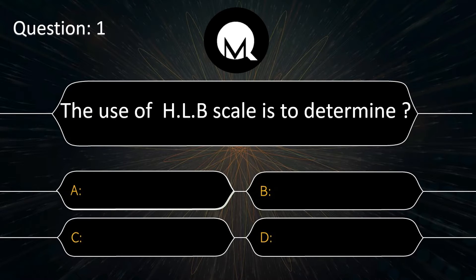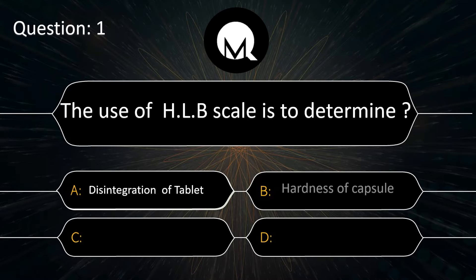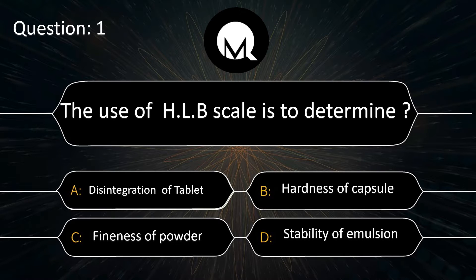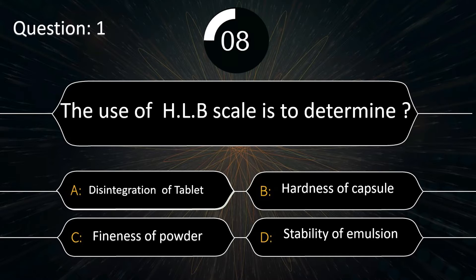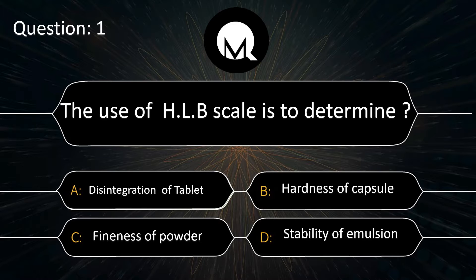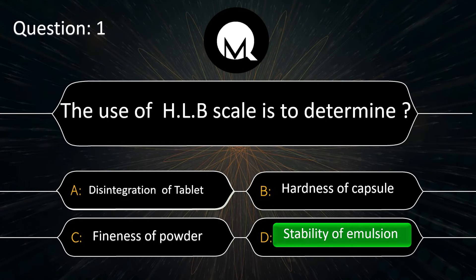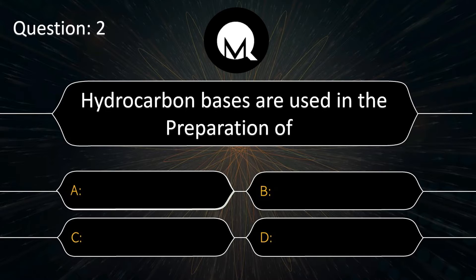The use of HLB scale is to determine: disintegration of tablet, hardness of capsule, fineness of powder, or stability of emulsion. The answer is stability of emulsion.